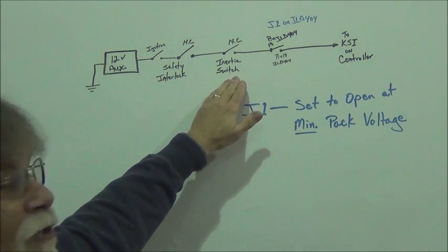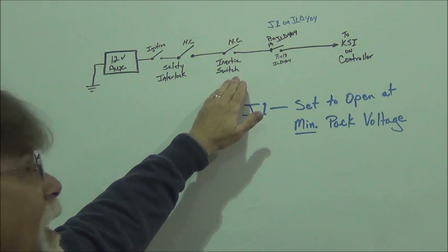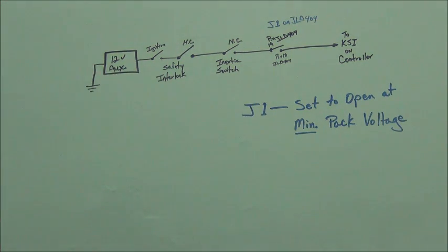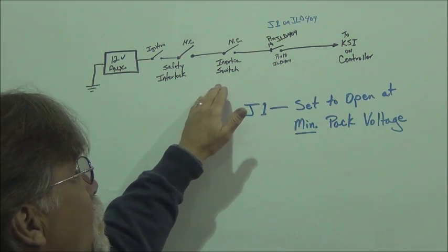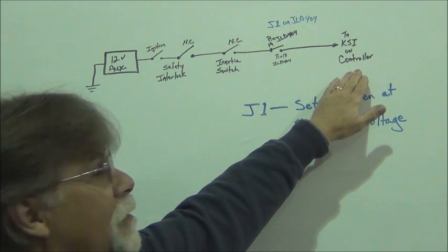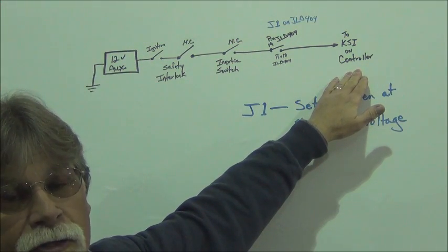So the safety interlock is a normally closed switch, relay, and then we have an inertia switch. And again, inertia switch is normally closed. When it senses an impact, it opens up.